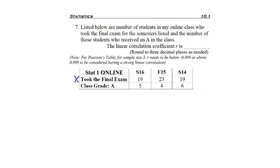First identify X, the number of students who took the final exam. I'm going to make an X column by taking the 19, 23 and 19 and writing them vertically, and at this point I'm going to total those three numbers to get 61.